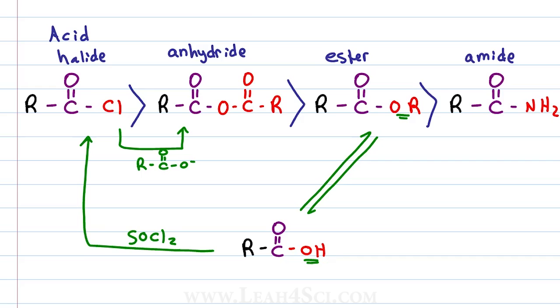To go from an ester to a carboxylic acid we just need a whole lot of water which is the conjugate acid of the OH group, so we'll show H3O+ or water and an acid catalyst. To go from the carboxylic acid to ester we just need a lot of OR, so we put an alcohol solution with an acid catalyst.